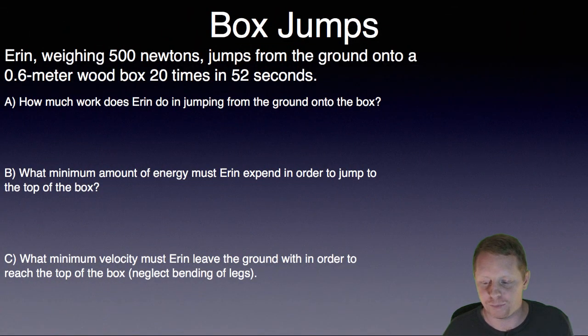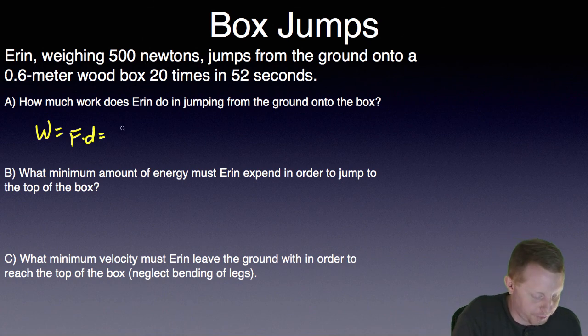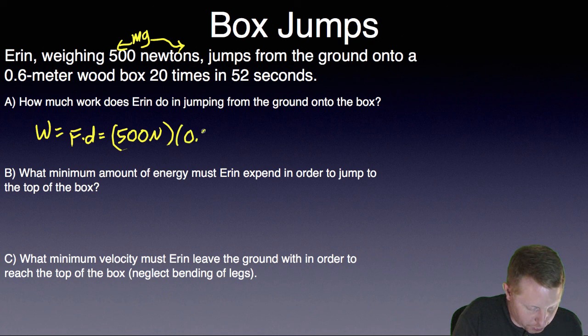How much work does Aaron do in jumping from the ground onto the box? Well, the work she does must be equal to the force she applies times the displacement. So work is force times displacement. The force is her weight, which is given to us, 500 newtons. Note that this time they're not giving us mass, they're giving us mg right there. It's already calculated for you. In the displacement, 0.6 meters is going to be about 300 joules.